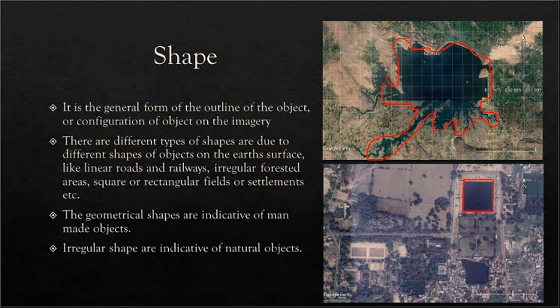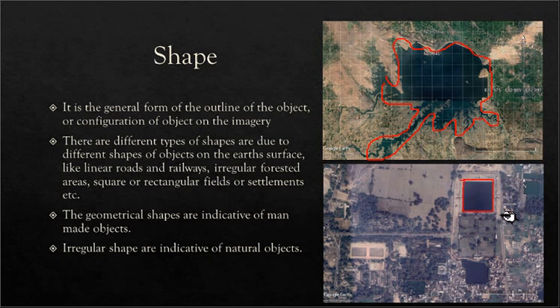There are different types of shapes, and this difference is basically due to the difference in the shape of the objects on the surface of the earth. They can be linear such as roads and railways, irregular such as forested areas, or square and rectangular such as fields or settlements. It is generally believed that geometrical shapes are indicative of man-made objects. Since this water body is square shaped, we can interpret it as a man-made creation. Whereas the other water body has many fluctuations in the outline — it is not a geometrical shape, making it indicative of a natural object.